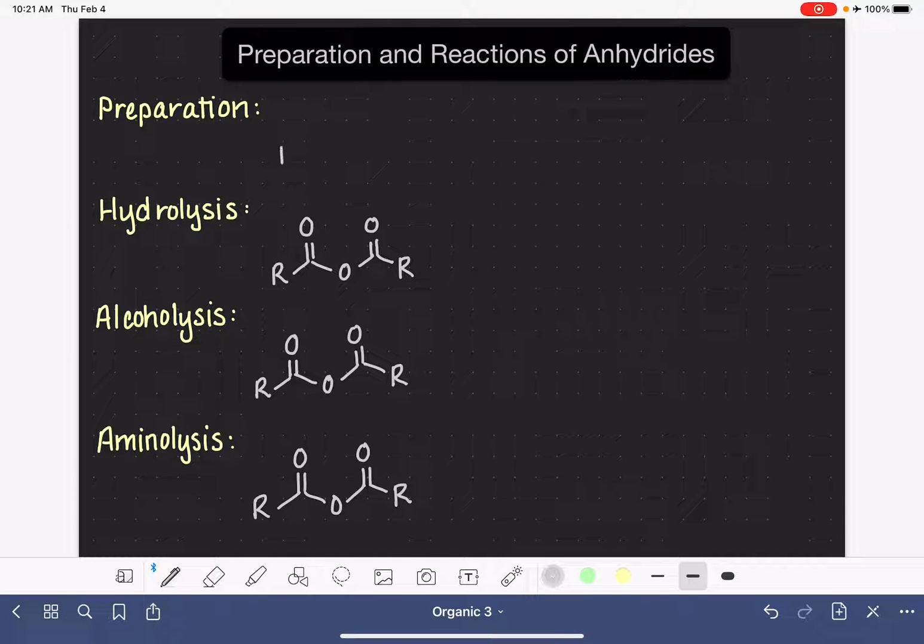For the preparation of an anhydride, the simplest, fastest way to prepare the anhydride is to use an acid chloride and react it with a carboxylate anion. It's like a deprotonated carboxylic acid. This will do the nucleophilic acyl substitution and replace the chloride with the rest of the anhydride.